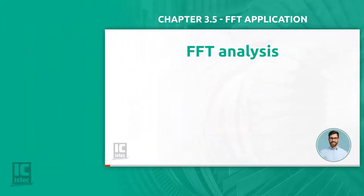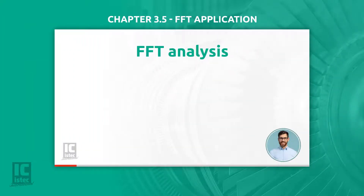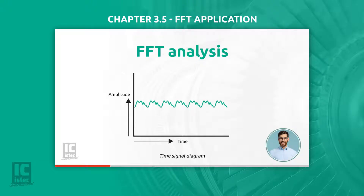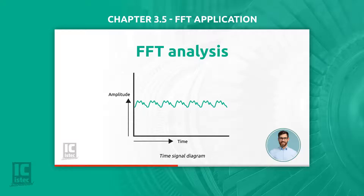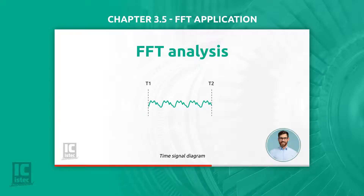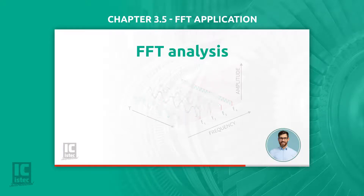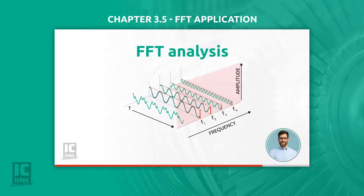We use techniques to separate signals into the different frequency components. One of these techniques is to convert a time signal diagram into an FFT diagram. From a certain period, let's say T1 to T2, a piece of a time signal is dissected into its individual frequency components. This is done for frequencies from F1 to Fn, dependent on the configuration of the measurement.